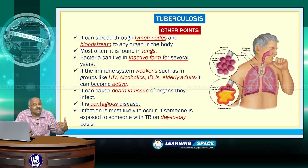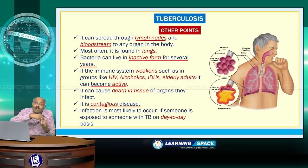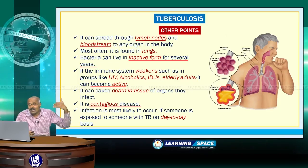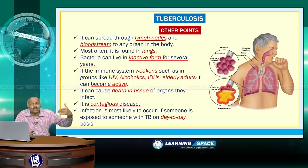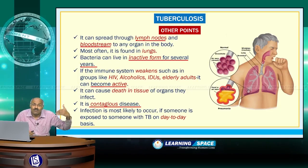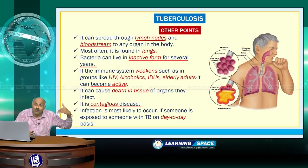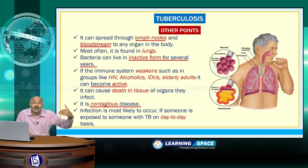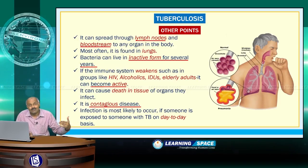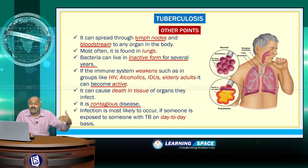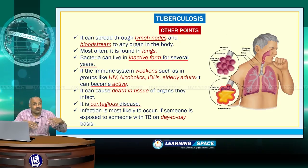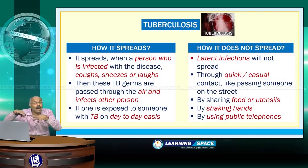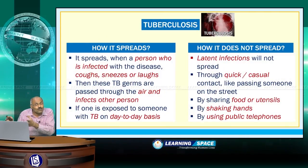Contagious disease means it spreads from one person to another. Infection is most likely to occur if someone is exposed to TB patients on a day-to-day basis. Now let us look at how TB spreads and how it does not spread.